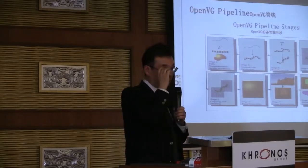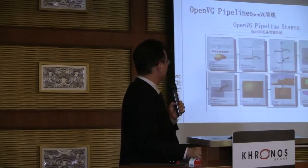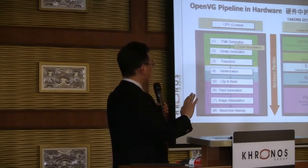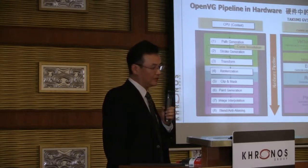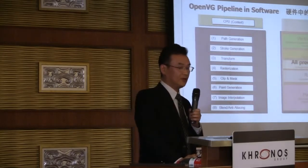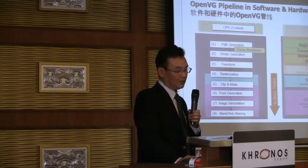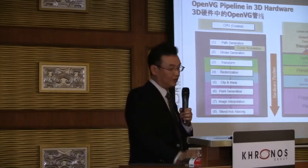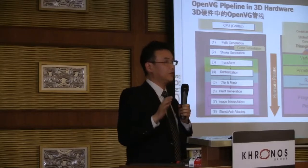It depends on the applications you make. It's better to understand what is happening in the API and inside hardware. Let me go through the pipeline. There are eight stages, and we implement these eight stages in hardware — this is just an example of the Takumi implementation. We have a full hardware implementation. Of course, there is a software implementation where all processing is done by CPU. There is also a half-and-half implementation, and an implementation on top of 3D hardware. In that case, you usually need triangle tessellation — you have to divide the shape into triangles, which is usually heavy iteration.